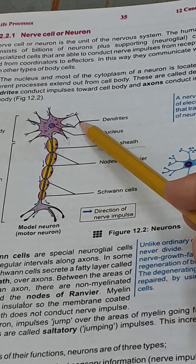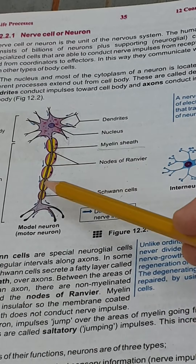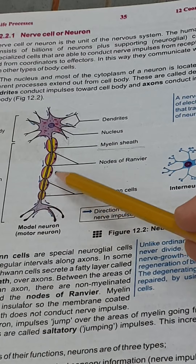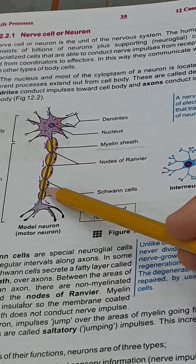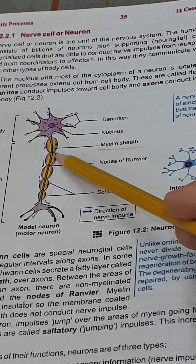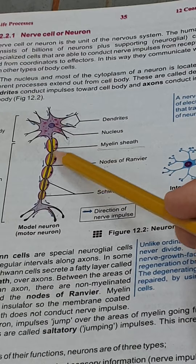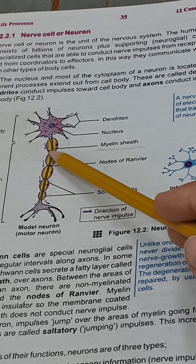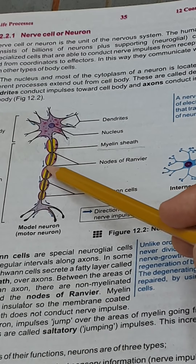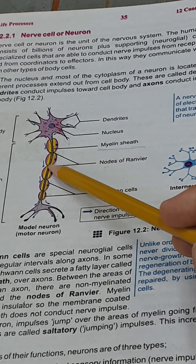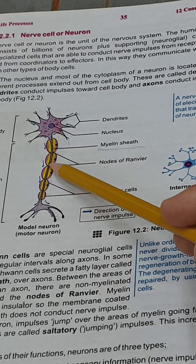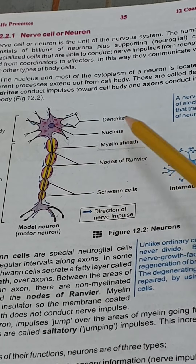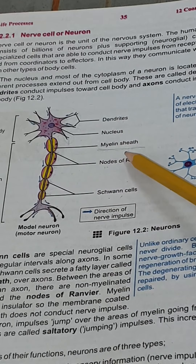So the typical structure of a neuron includes the cell body, dendrites, and axon. Along with the axon there are Schwann cells, and along with the Schwann cells there is the myelin sheath. In between the myelinated parts are non-myelinated points known as the nodes of Ranvier.